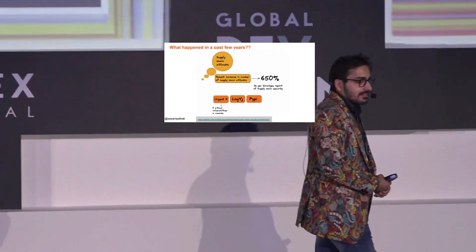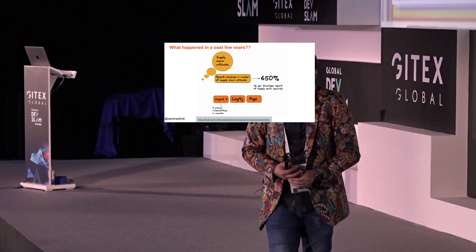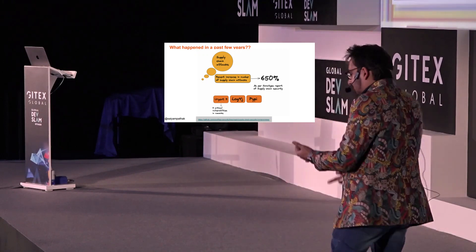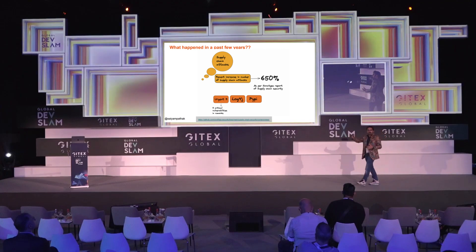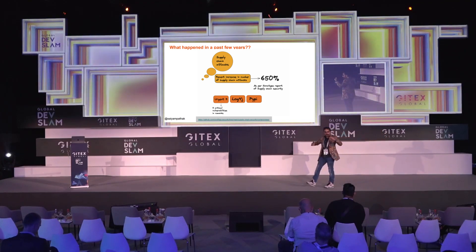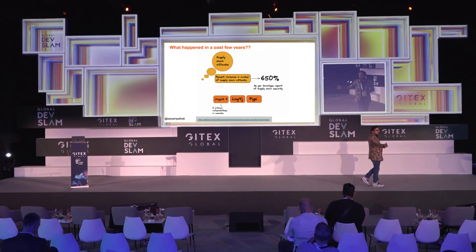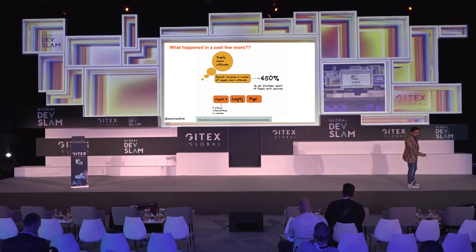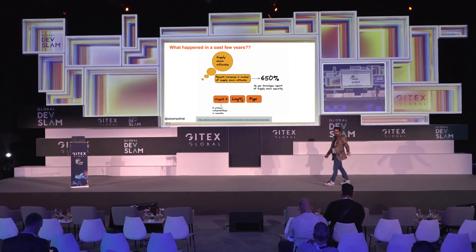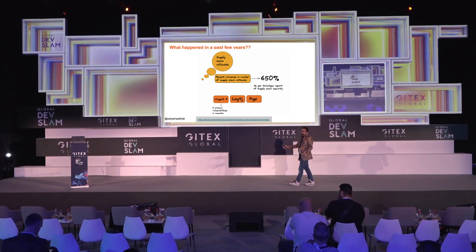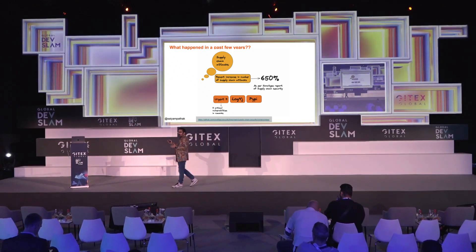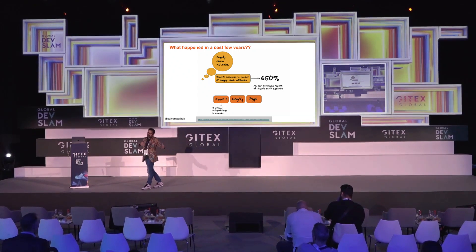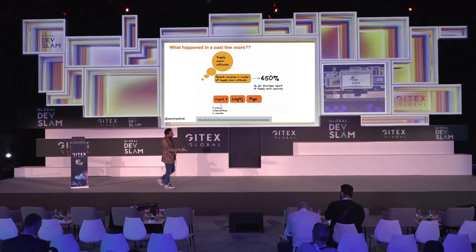Some very interesting attacks: the Urgent11 vulnerability impacted MRI machines and F-22 jets. You can imagine the scale a small attack can reach — ships, F-22s, MRI machines. There were 11 critical vulnerabilities there. Then the SolarWinds attack, the log4j attack — which is a simple logging library in Java — impacted hundreds of thousands of customers and cost hundreds of thousands of dollars to fix.